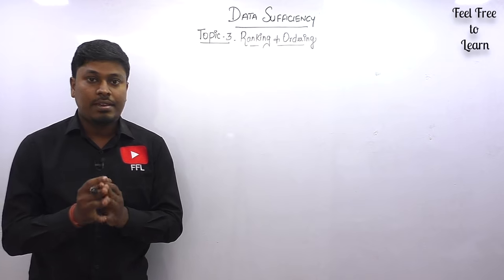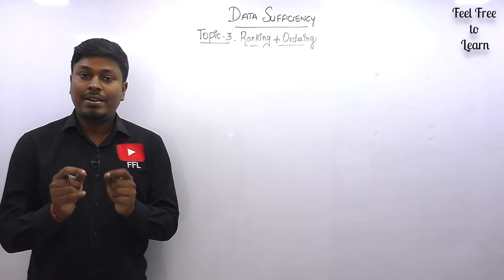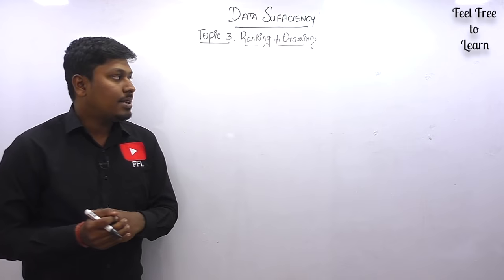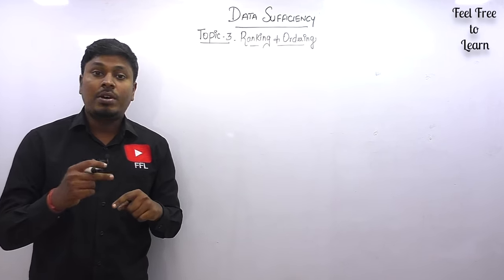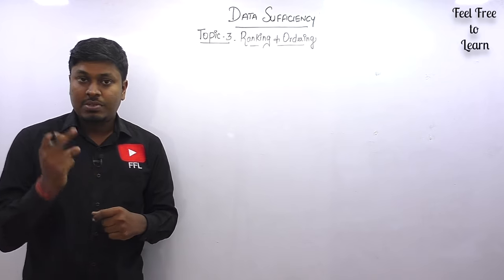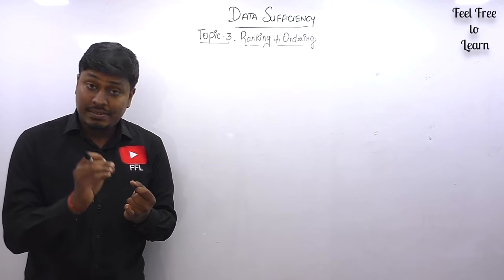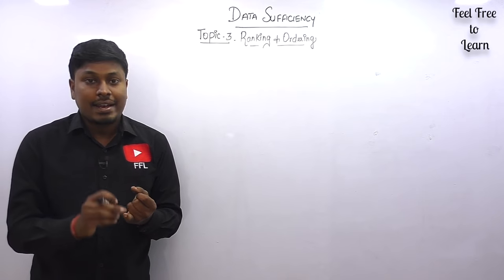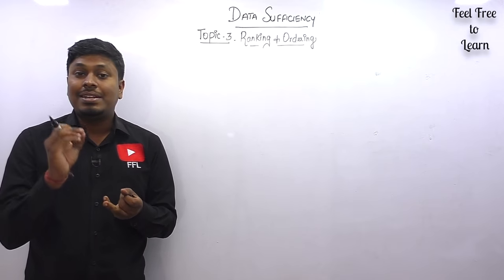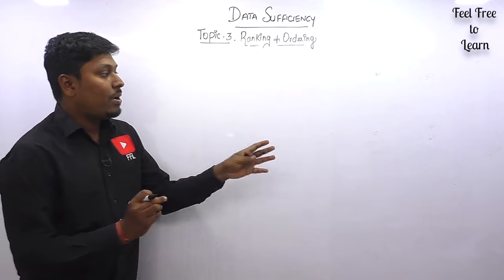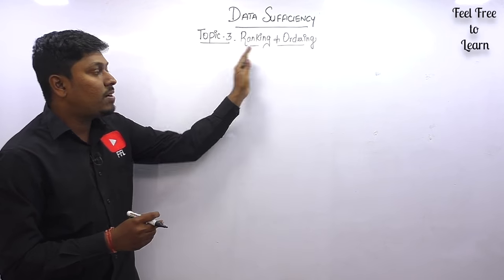Thanks for being here on my YouTube channel. In this video we are going to solve 12 data sufficiency questions based on the topic called ranking and ordering. Don't forget to watch our previous two videos — in video one we solved 12 data sufficiency questions on directions, and in video two we solved 12 questions on blood relations. Now we are going to solve 12 questions on ranking and ordering.